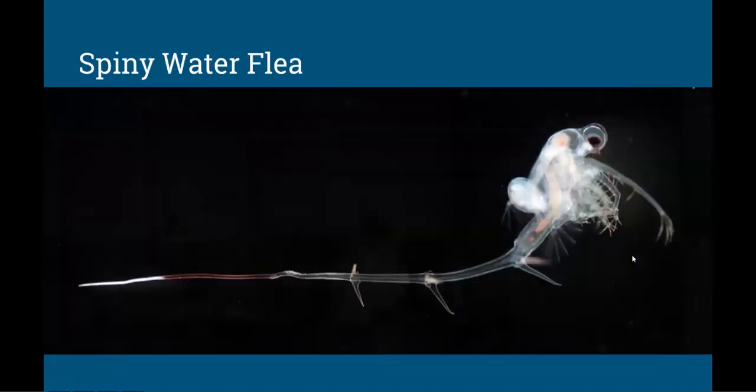Also found in Lake Michigan are spiny water fleas. These little creatures act similar to the zebra mussels in that they eat plankton and remove food from the bottom of the food web in Lake Michigan.